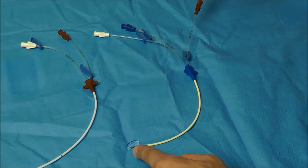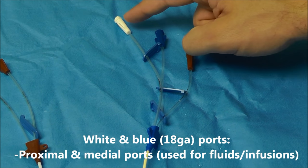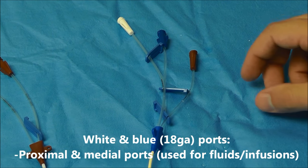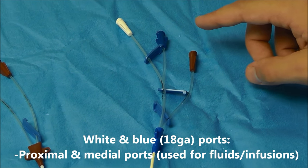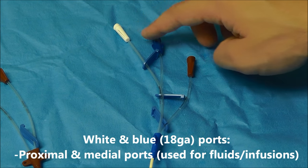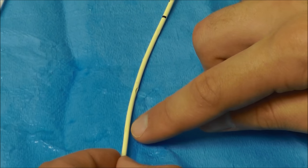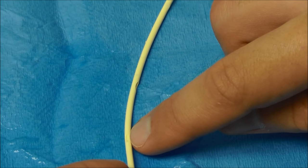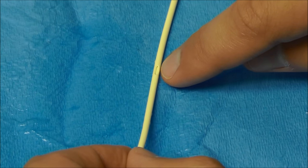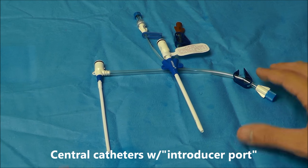The blue and white ports on this triple lumen are referred to as the medial and proximal ports because injecting through these ports, if you come down, that fluid is going to come out through either that port right there or that port right there.